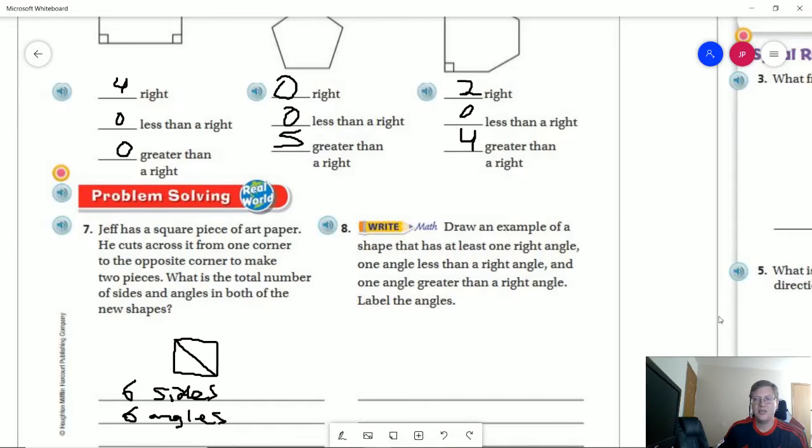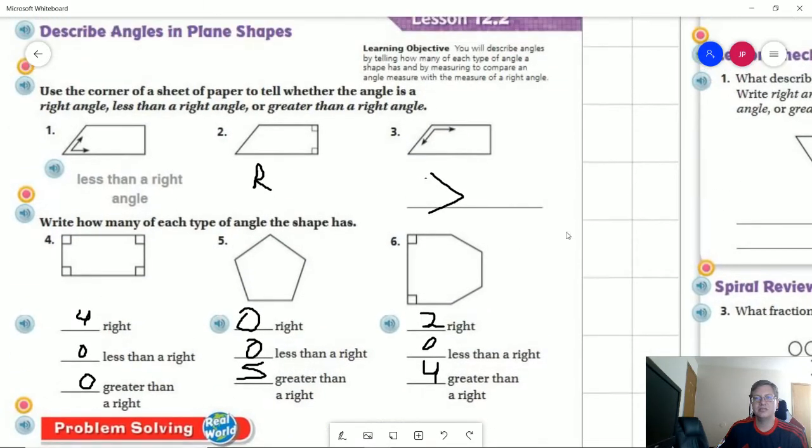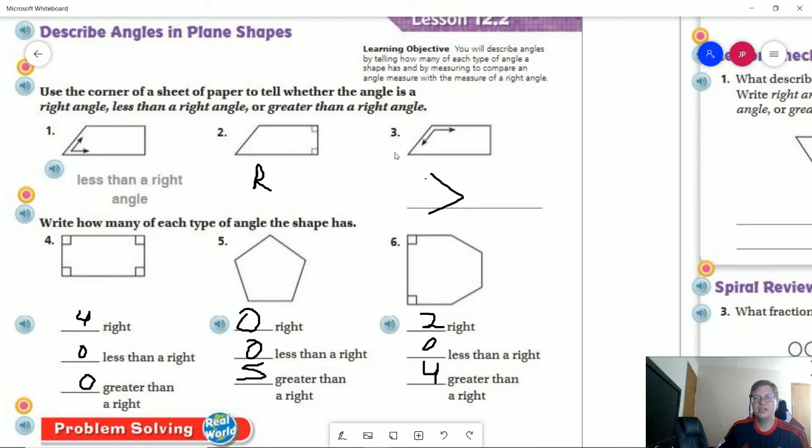And number eight, draw an example of a shape that has at least one right angle, one angle less than a right angle, and one angle greater than a right angle. If you do this one or this one, because they're both essentially the same thing, they're just asking you for a different part, this one would be exactly what we were looking for.